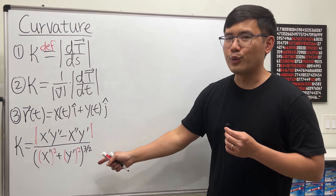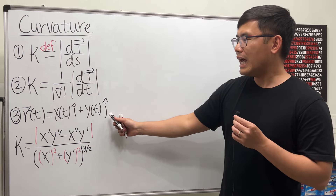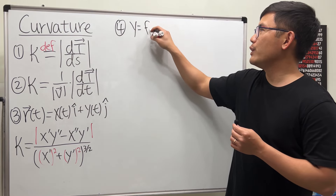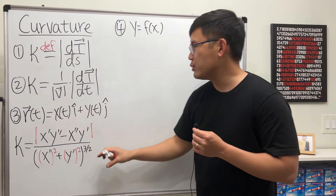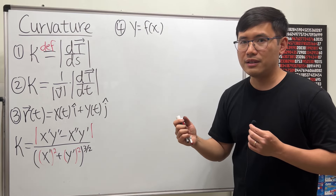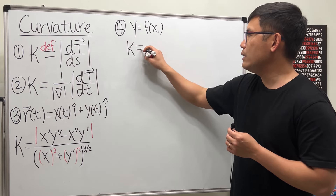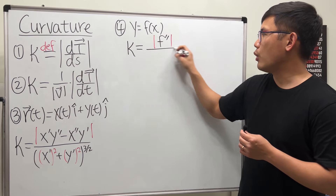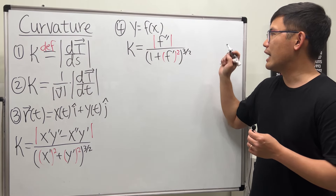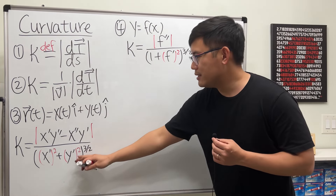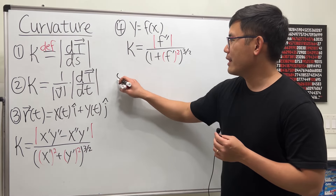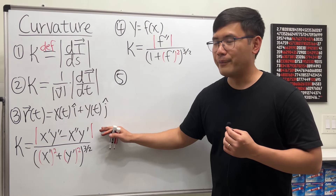There is a video on the proof of this — the link will be in the description. Now, when we have a plane curve of the form y = f(x), we also have a nice formula. We can derive it by parameterizing: let x = t and y = f(t), and we end up with kappa equals |f''| over (1 + f'^2) raised to the three-halves power. There is also another way to prove this, with a link in the description.